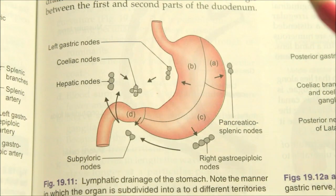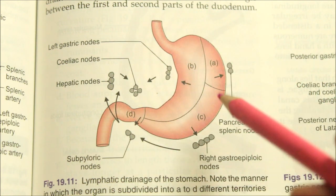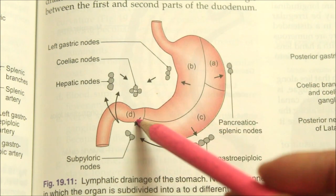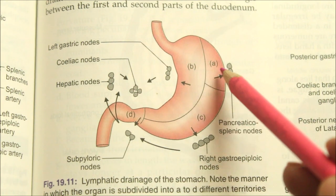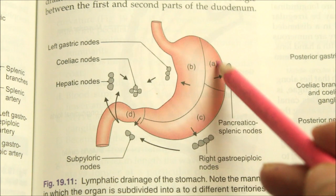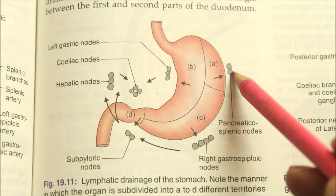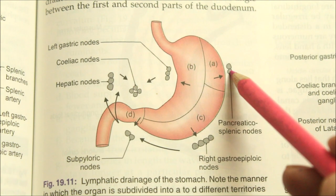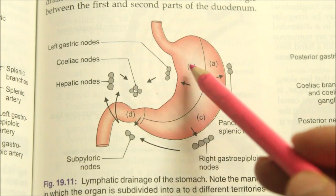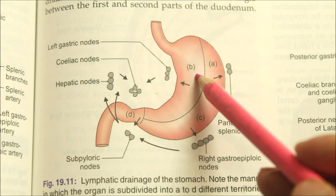Looking at the lymphatic drainage, the stomach can be divided into four lymphatic territories: A, B, C, and D. The upper part of the left one-third of the stomach drains into the pancreaticosplenic nodes lying along the splenic artery.